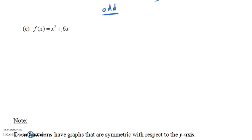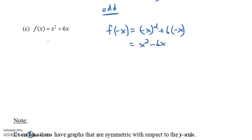Now the last example: f of x equals x squared plus 6x. If we write f of negative x, we get negative x quantity squared plus 6 times negative x. Notice that's x squared minus 6x. But that's not the same thing as the original function x squared plus 6x. It's also not the negative of the original function, which would be negative x squared minus 6x. So in this case we have neither — this is neither even nor odd. We don't get the original function or the negative of the original function back.